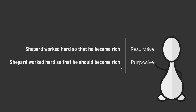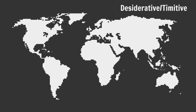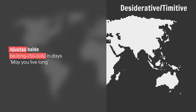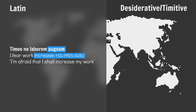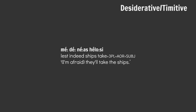Desirative and timidive modality express wishes, desires, fears, etc. Here's an example of desirative modality in Fula, and here's an example of timidive modality in Latin. Interestingly, the communication of fears in classical Greek is so moody that we can drop the verb of fearing altogether and the meaning of the statement doesn't change — the fearing part is totally implied.